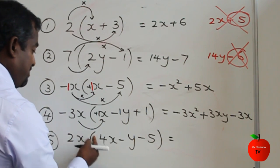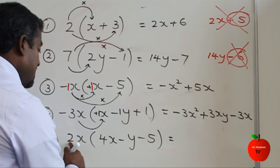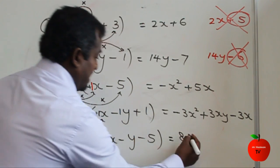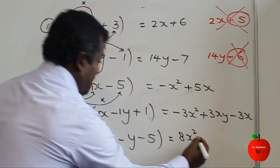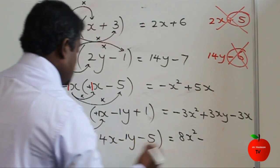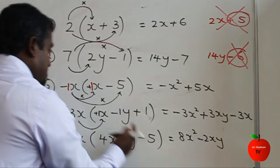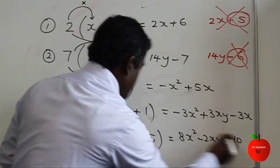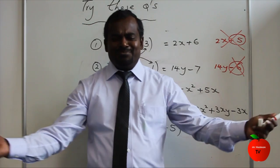Continuing question five: plus times plus is plus, 2 times 4 is 8, x times x is x squared. Then plus times minus is minus, 2 times 1 is 2, x and x. Then plus times minus is minus, 2 times 5 is 10, x. Very simple — just follow sign, number, letter each time.